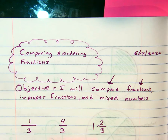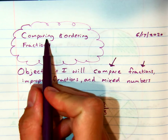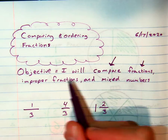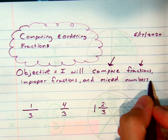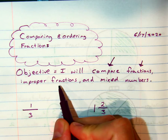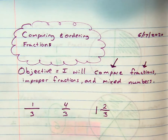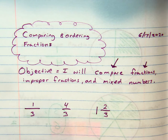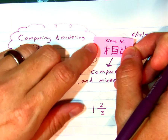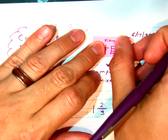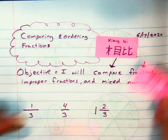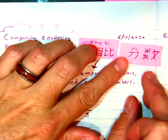Let's take a look at our title and learning objective: Comparing and Ordering Fractions. The objective is: I will compare fractions, improper fractions, and mixed numbers. For our language learners, I want to make sure we're using the same terms. I believe the pronunciation for comparing is 'Zhang V,' and fractions is 'Feng Shui' — please correct me if I'm wrong.